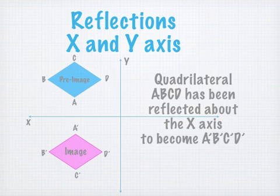This time it's flipped over the X axis. The axes are labeled X and Y and they're in blue. The same A, B, C, and D corresponds to A prime, B prime, C prime, and D prime, and this time it's flipped over the X axis. The quadrilateral ABCD has been flipped or reflected over the X axis, and you can see that A is the same distance from the X axis on each side.